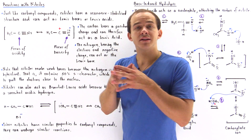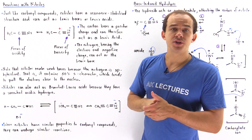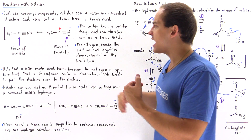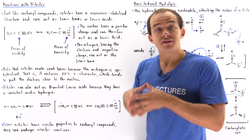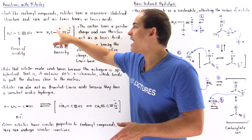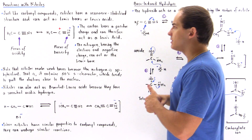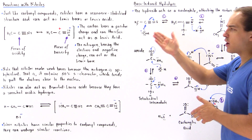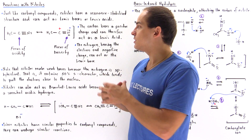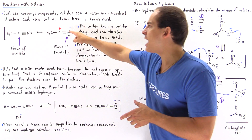The carbon is the focus of Lewis acidity on the nitrile — it acts as the Lewis acid because it contains the positive charge and the open 2p orbital. On the other hand, it's the nitrogen that is the center of Lewis basicity, because it contains the lone pair of electrons that can grab some other atom or molecule. So if we react a nucleophile with the nitrile, it's the carbon that will react with our nucleophile and not the nitrogen.